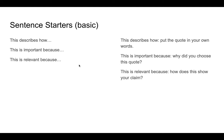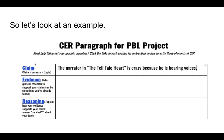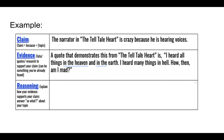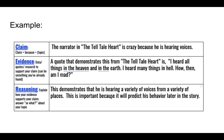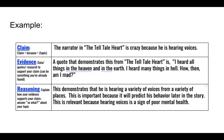In the next project, we'll go into intermediate and advanced sentence starters, but for right now just stick with the basic. So let's look at an example. Claim: The narrator in The Tell-Tale Heart is crazy because he's hearing voices. Evidence: A quote that demonstrates this from The Tell-Tale Heart is, 'I heard all things in heaven and in the earth. I heard many things in hell. How then am I mad?' Now for reasoning — this demonstrates that he is hearing a variety of voices from a variety of places; this isn't healthy. This is important because it will predict his behavior later in the story — if you've read The Tell-Tale Heart, he thinks he's hearing the heartbeat underneath his floorboards and he confesses to a murder.